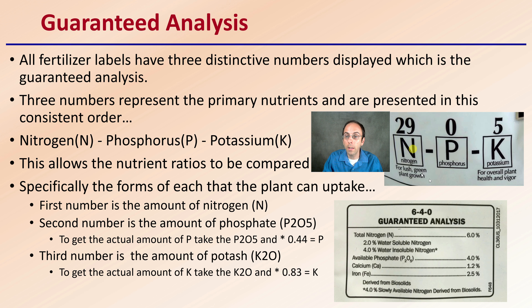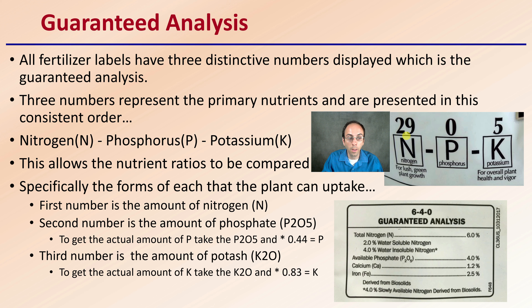In this case, this fertilizer has no phosphorus, but it is still listed as a number — zero. This allows nutrient ratios to be compared to any fertilizer. Specifically, the forms of each that the plant can uptake can be listed as well.